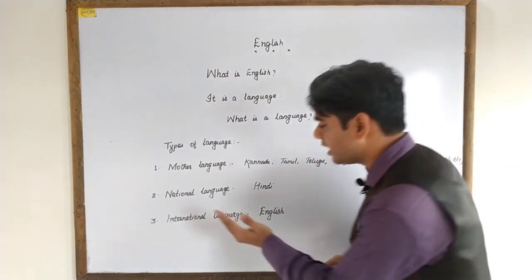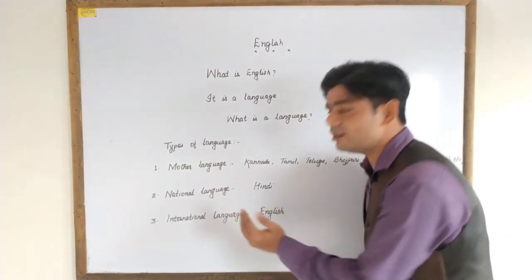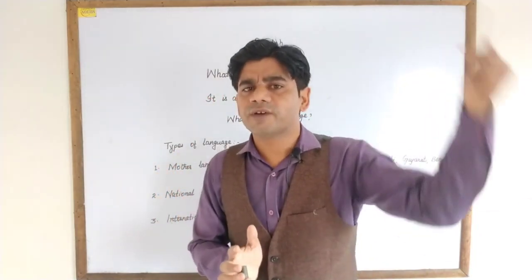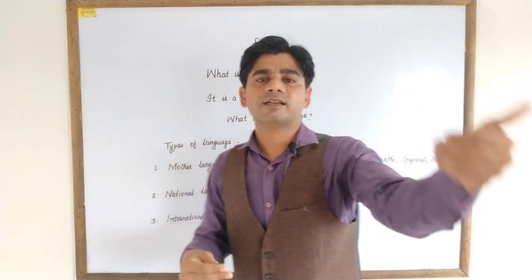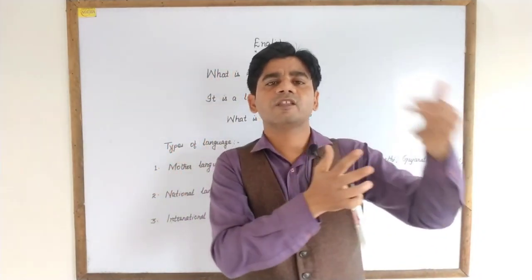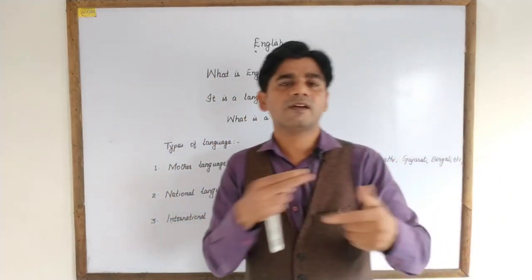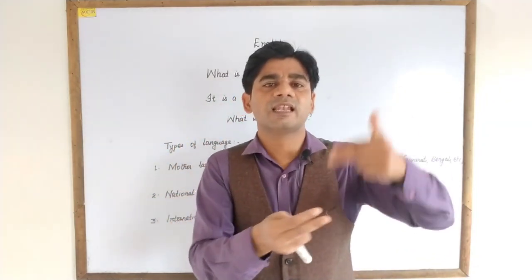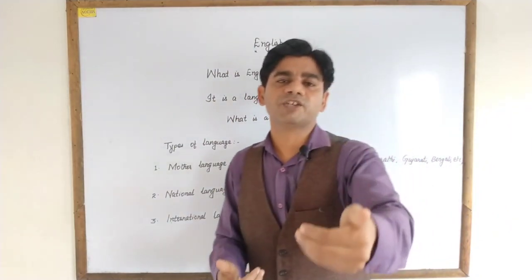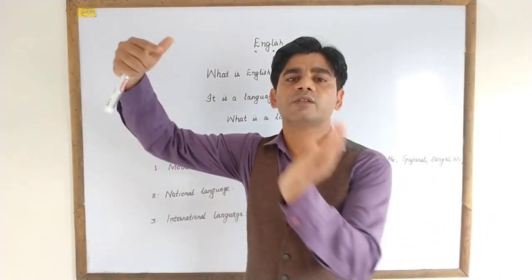Now, coming back to the next point, we have one more language: international language. What is international language? A language which is not only spoken in one country but also spoken throughout all the world's countries is known as international language. You may have already understood which language is known as an international language — it is English. Because English is not only spoken in one country but also spoken throughout all the world's countries, that's why English is known as an international language.